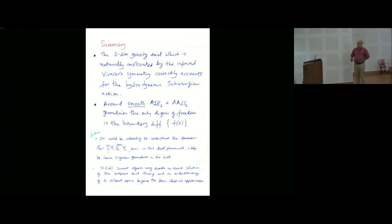The two-dimensional gravity dual, which is naturally motivated by the infrared Virasoro symmetry, correctly accounts for the hydrodynamic Schwarzian action. Around smooth AdS-2 and almost-AdS-2 geometries, the only degree of freedom is the boundary, that is this DIF generated by this f of tau. I think this is what we could do. In the future, it would be interesting to understand these operators which correspond to the other part of the more massive spectrum of the SYK model, and try to understand the dual framework.